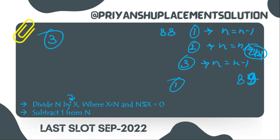The answer for 89 is 3 steps. In the question they haven't mentioned a particular X — we can take X as any number that follows the conditions. I hope you got the question. It's very easy — you just need to analyze it and you can make the code easily.